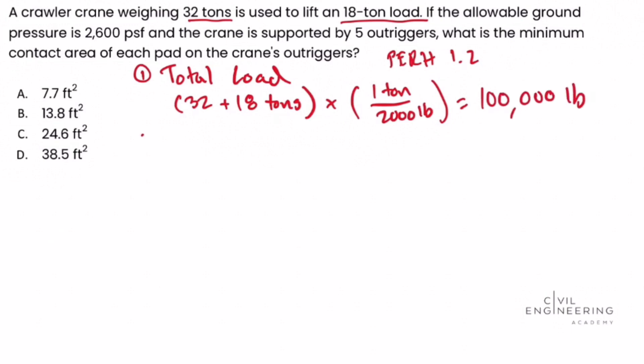Then in step two, what we're going to do is calculate the area. So that's ultimately what we're asked for. So we're going to start heading towards that direction. We're going to take our 100,000 pounds and we're going to divide it by the allowable ground pressure.